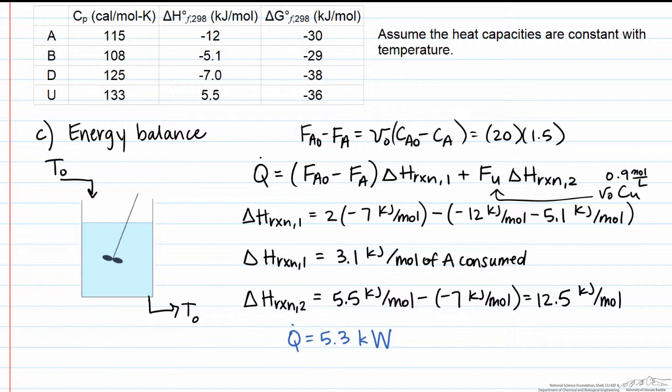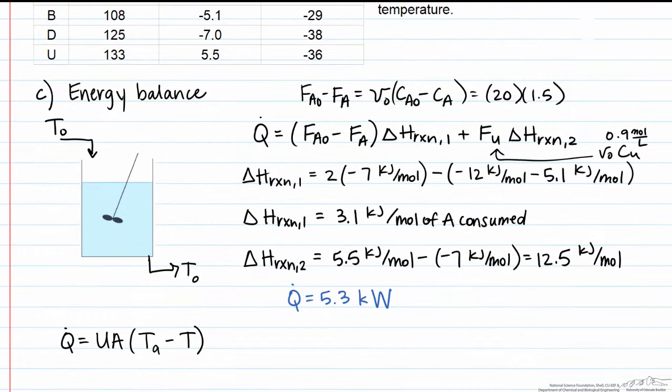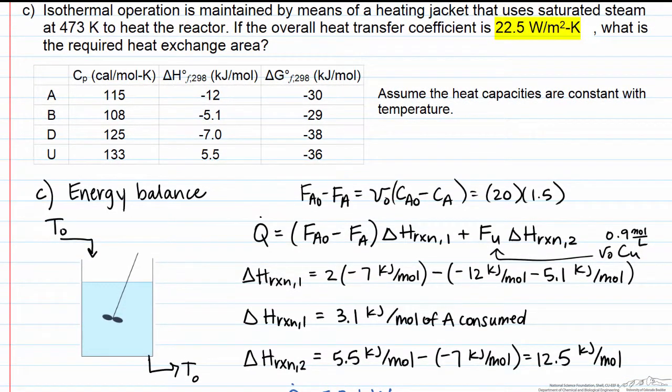We now know how much heat has to be added, and we can relate that to the amount of heat exchange area that we need. The overall rate of heat transfer is equal to an overall heat transfer coefficient times the area that we're trying to solve for for the jacket times the temperature difference across which the heat is being transferred. The overall heat transfer coefficient is 22.5 watts per meter squared kelvin.